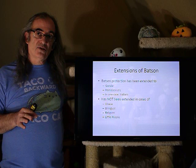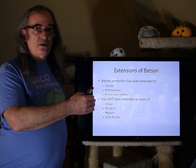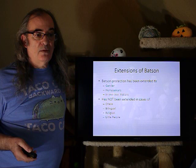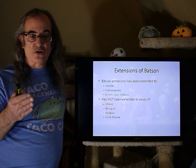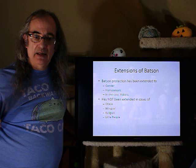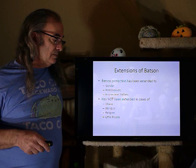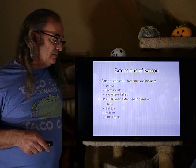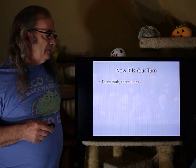Batson protections apply to cognizable groups, but the ruling has not been extended in all cases. It has not been extended to cover the obese — for example, when an obese person sues an airline for requiring them to pay for two seats and the defense systematically excludes obese jurors. It also has not been extended to the bilingual, to religious groups, or to little people.